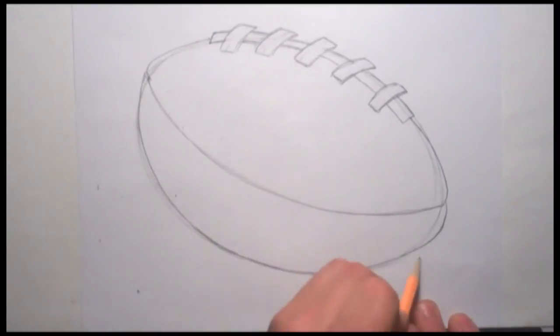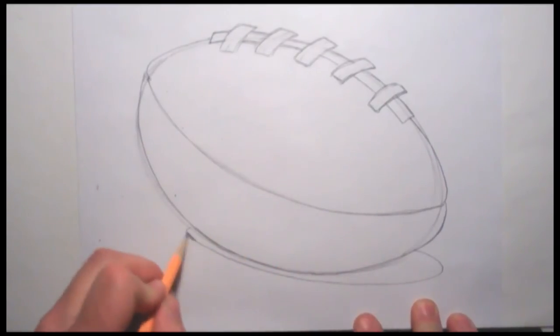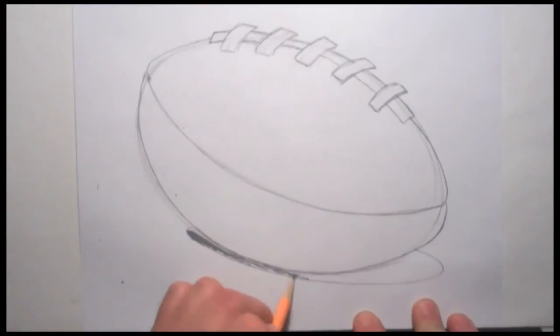Let's go ahead and give this football a shadow. Come right through here and make an oval. It gets very close to this football because this football is closer here than it is over here. And we'll just go ahead and shade this in. That allows our football to pop off the page.